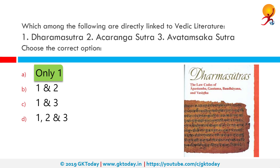On the other hand, Akaranga Sutra is the first of the 12 Angas, part of the Agamas which were compiled based on the teachings of Mahavira. And the Avatamsaka Sutra is one of the most influential Mahayana Sutras of East Asian Buddhism.